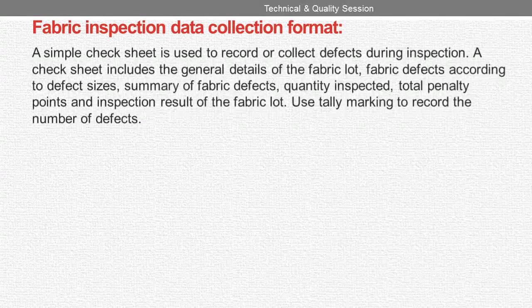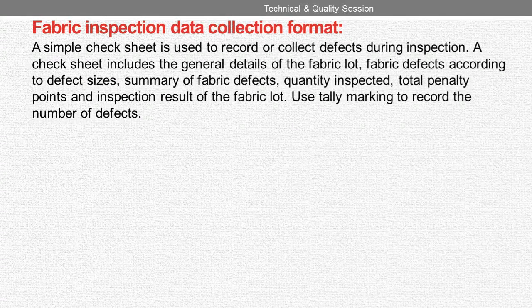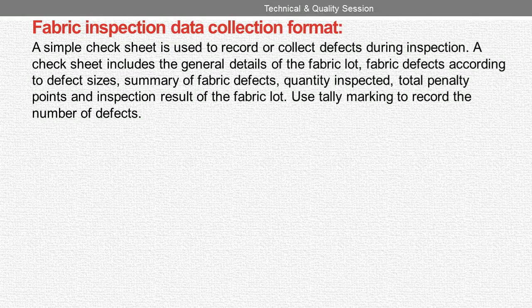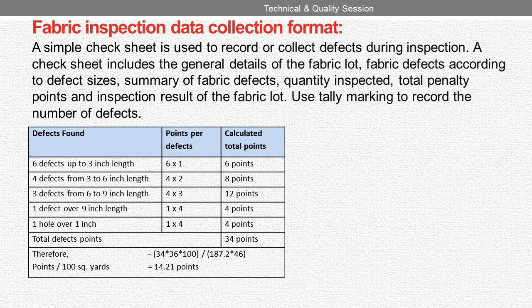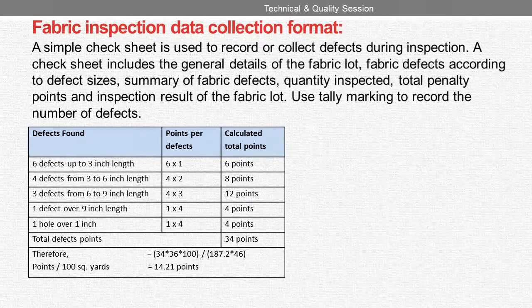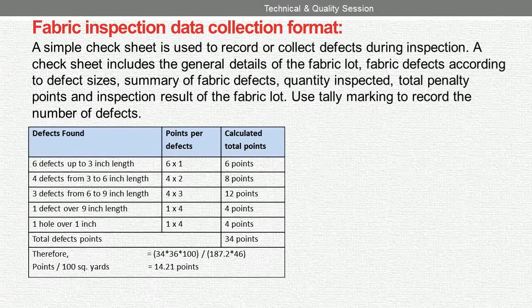Fabric inspection data collection format. A simple check sheet is used to record or collect defects during inspection. A check sheet includes the general details of the fabric lot, fabric defects according to defect sizes, summary of fabric defects, quantity inspected, total penalty points, and inspection results of the fabric lot. Use tally marking to record the number of defects.